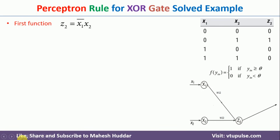Now we continue with Z2, which is equivalent to X̄1·X2. The truth table shows that when X1=0 (so X̄1=1) and X2=1, Z2 is high. In all other cases it is 0. The activation function remains the same. We need to find the optimal weights, threshold, and learning rate for this part of the network.